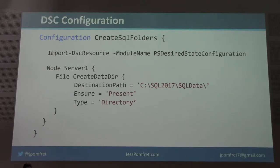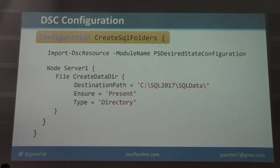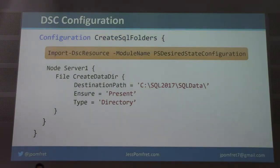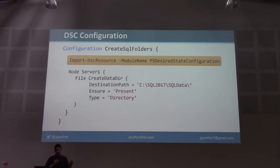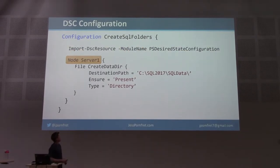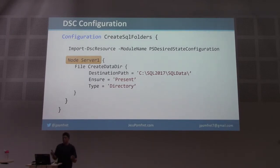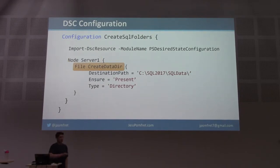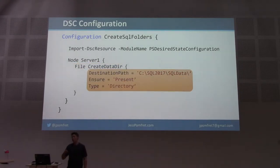Now let's talk about our first configuration document — the document we create to define our desired state. We have the 'Configuration' keyword and I've named it 'CreateSQLFolders.' This is a special type of PowerShell function — part of that domain-specific language. Within that, we import the resources we want to use with Import-DscResource, which can only be used within a configuration block. Within that we have the Node block — you can have one or more node blocks, specifying one or more servers in each. I've hard-coded Server1, but I could also pass in an array of servers. Within that we put our resources — this is the File resource. We've named it 'CreateDataData,' which must be unique within your configuration document, and then we define the properties: destination path, ensure it's present, type is Directory.